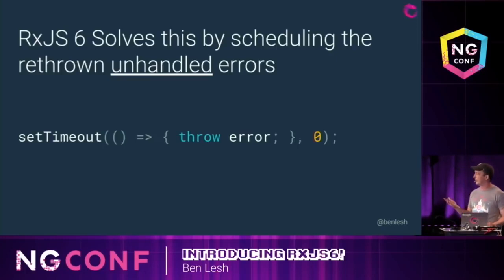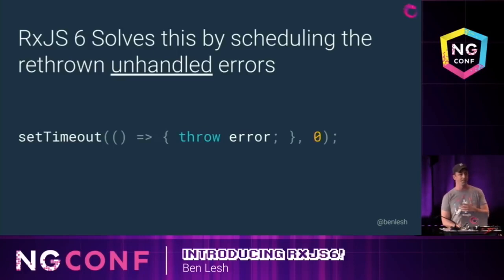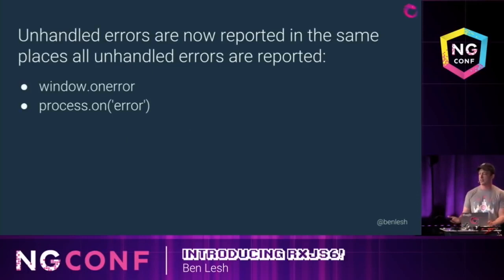The lingo for this is called host report errors. What this does is it throws it in its own call stack where it can't bubble up to hit anybody's try-catch, and that means it's going to get reported to window.onerror or process.onerror, where you would expect unhandled errors to go.